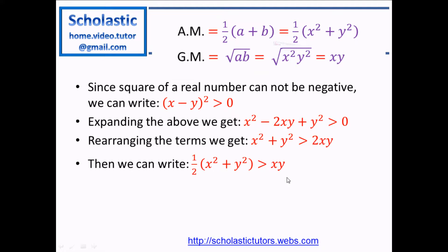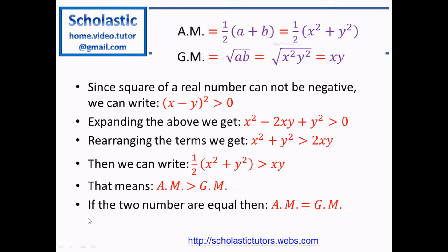Now I think you can see the expression here. Half of (x squared plus y squared) is basically the arithmetic mean, and xy is the geometric mean. So we have proved that arithmetic mean is greater than geometric mean. That means half of (x squared plus y squared) can be replaced with AM, and xy can be replaced with GM. So arithmetic mean is always greater than the geometric mean. But there is a condition where it can be equal: if the two numbers are equal, then arithmetic mean equals geometric mean. For example, if a equals b, then x equals y, and x squared plus y squared becomes 2x squared.